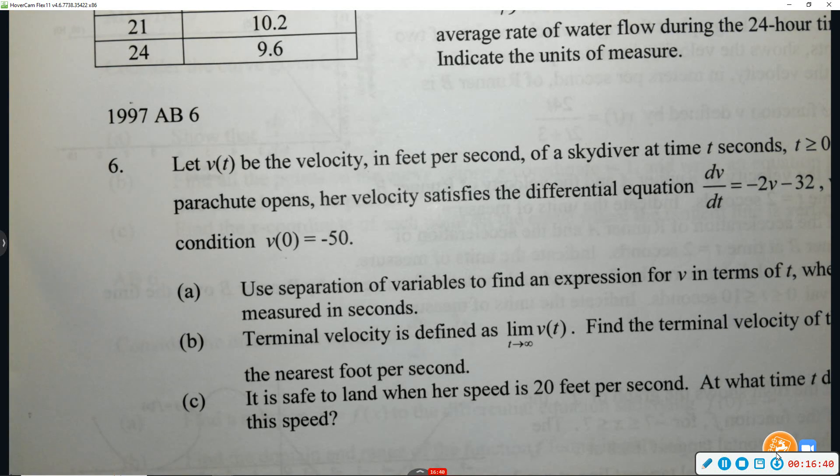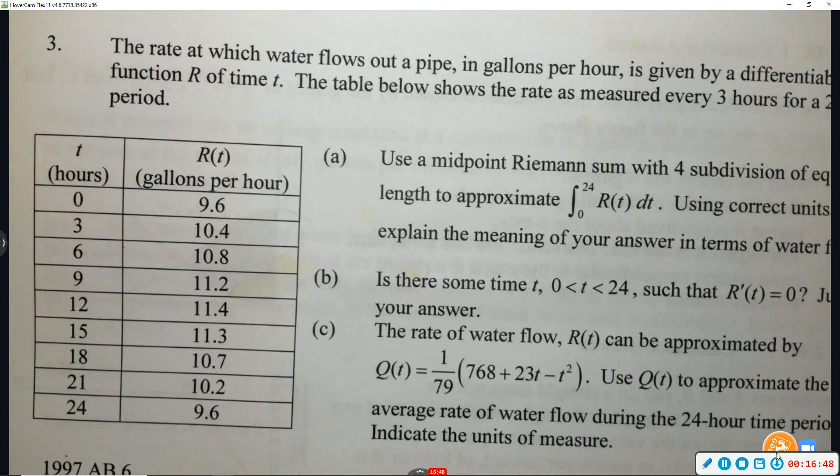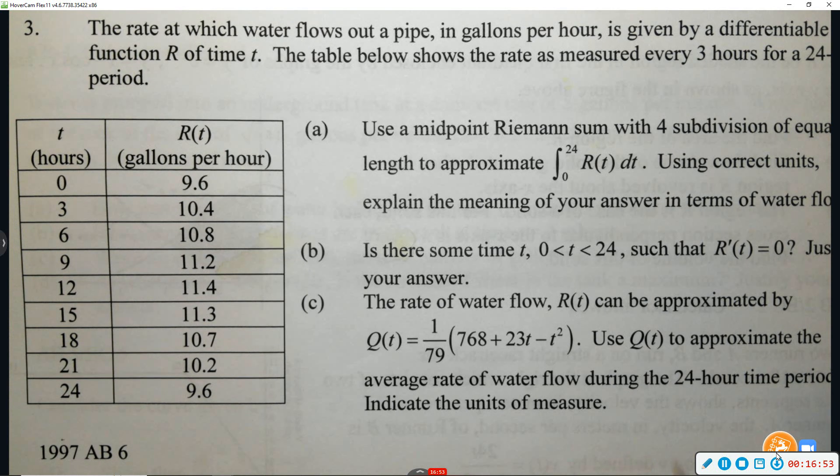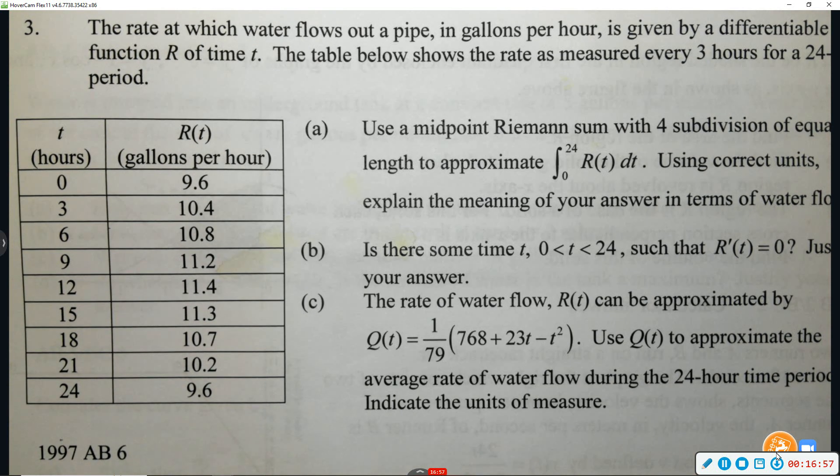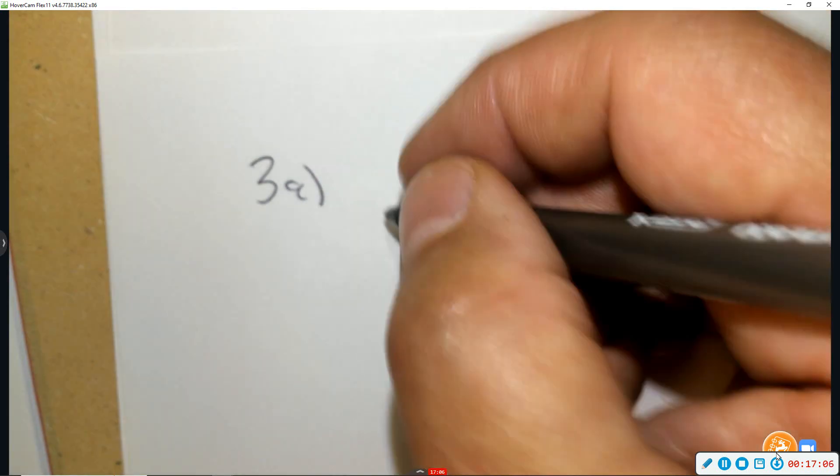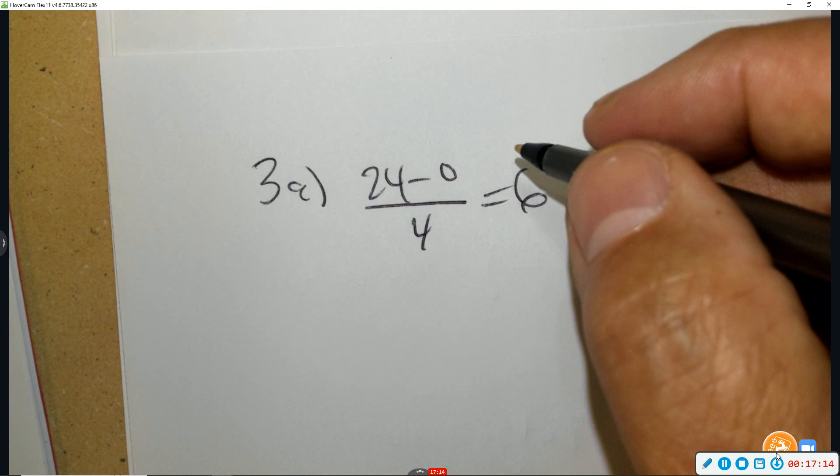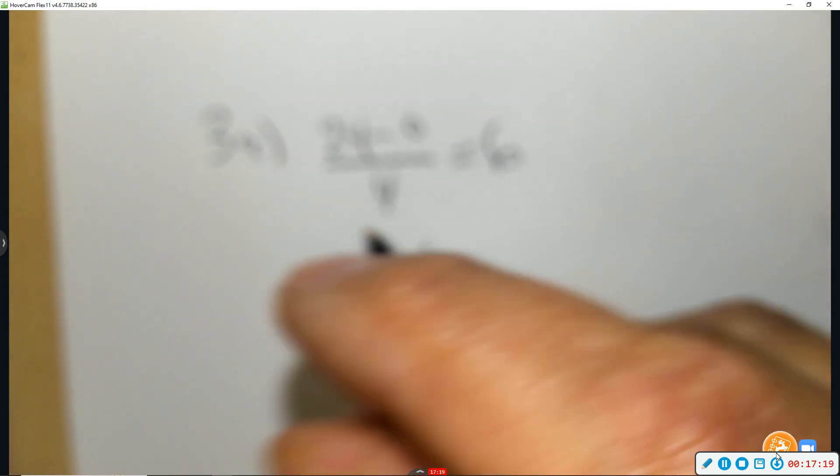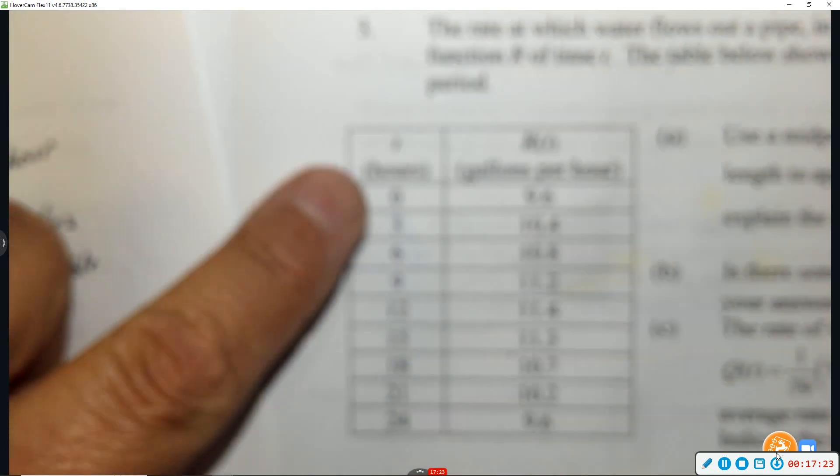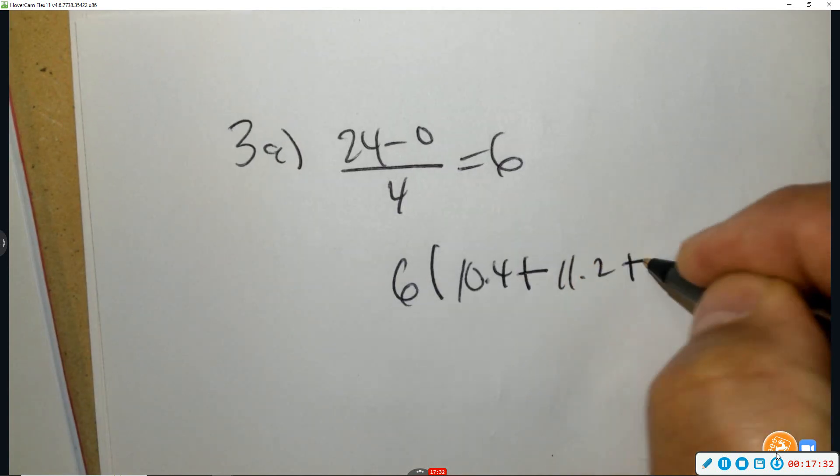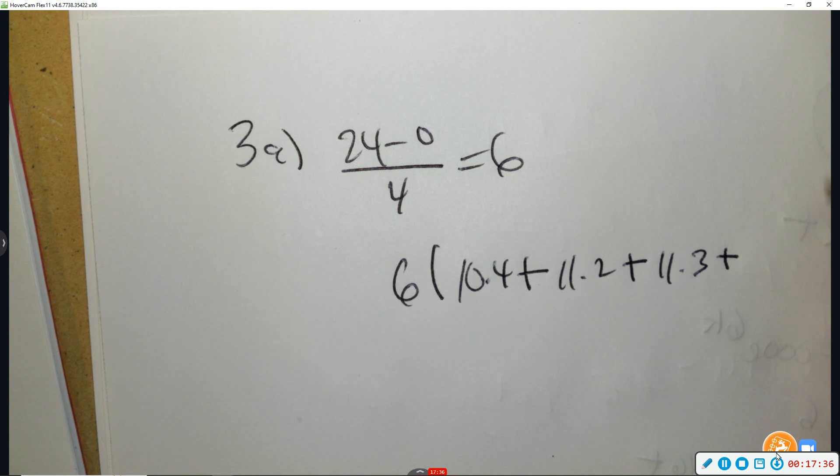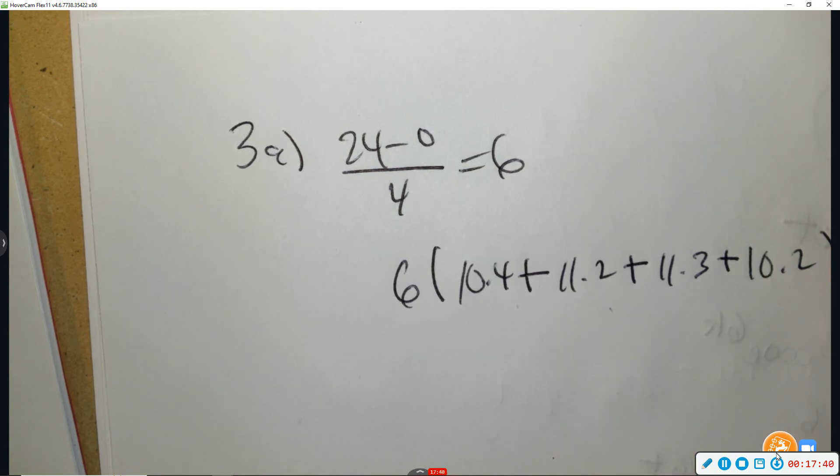All right, read number three. The rate at which water flows out of a pipe is given there as a table. And they said first use a midpoint Riemann sum. So this one's going to be a pretty basic one, right, to begin with, which is good. So we're going to use that table to do a midpoint Riemann sum. So first of all, we need to know four divisions. So it's 24 take away 0 divided by 4. So that's 6 is each width. That's to begin with. And then a midpoint. So 0 to 6, the middle is 3. So the first one goes 0 to 6, so the middle is 3. So I use 10.4. Just a rectangle. The next middle would be 11.2. The next middle would be 11.3. The next middle would be 10.2. And there are your four rectangles. You don't have to simplify it.